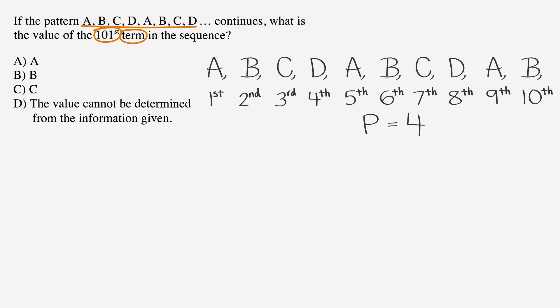To find our answer, we need to divide the term number that we're looking for, or 101, by the number of terms before the pattern repeats, or four. What's left over, or the remainder, is going to help us solve our problem.